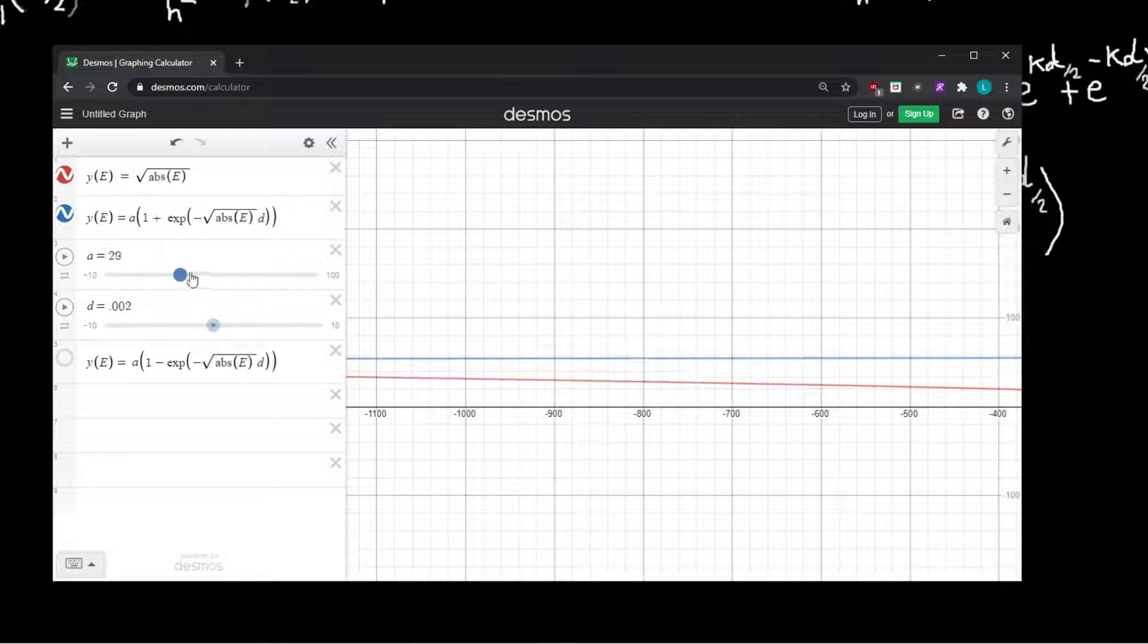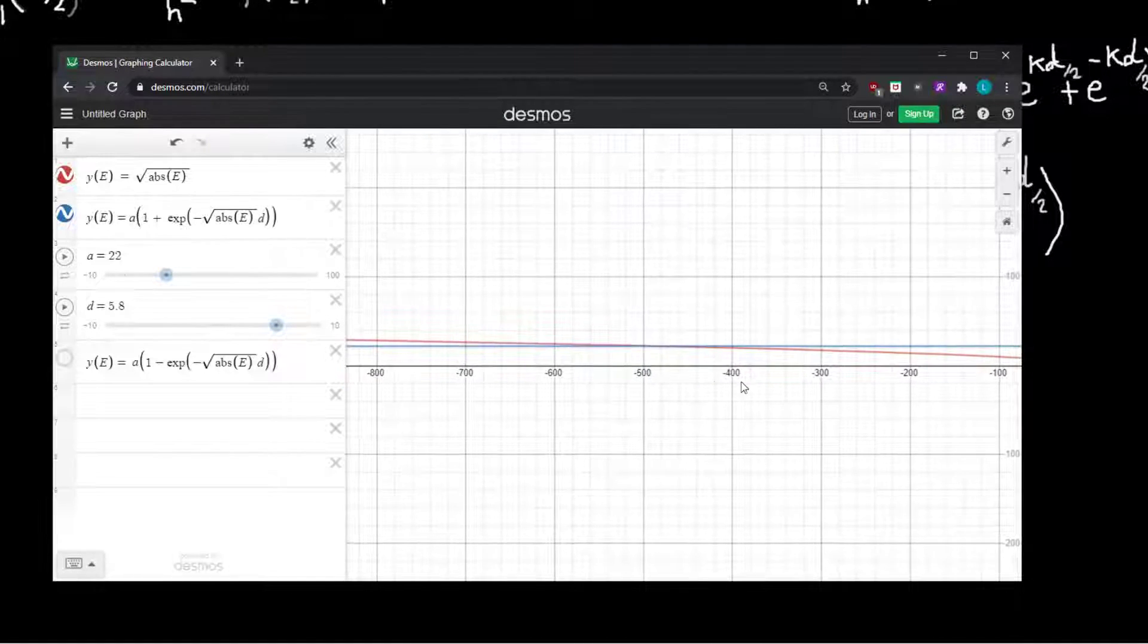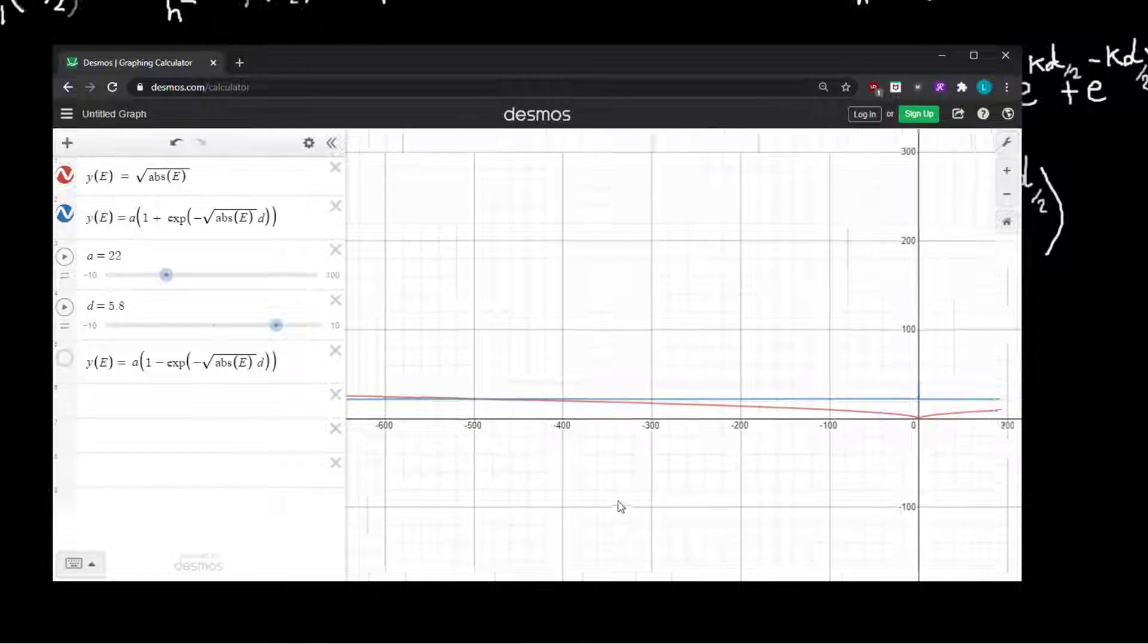And as I change A or D, so A is the strength of the well, it's alpha, and then D is just the distance between the wells, it kind of changes where the intersection happens, but there's always one and only one intersection.